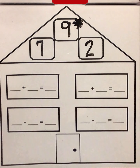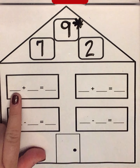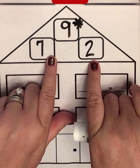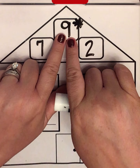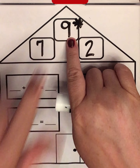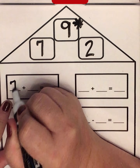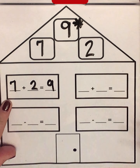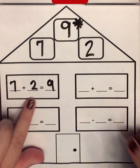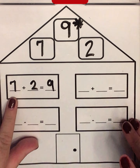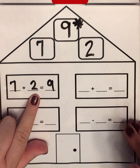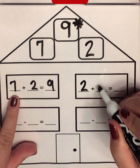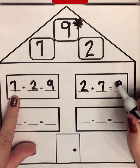Let's make some equations. First, we have an addition equation. When we add the two smaller numbers, we will get the larger number at the top. So first we're going to write 7 plus 2 equals 9. For our next addition equation, we are going to flip these two numbers. So we're going to start with 2 plus 7 equals 9.